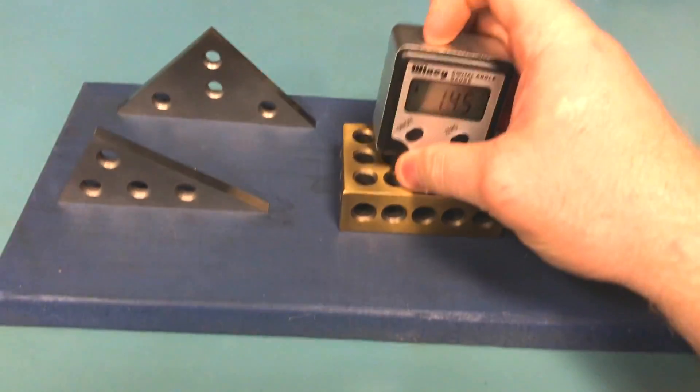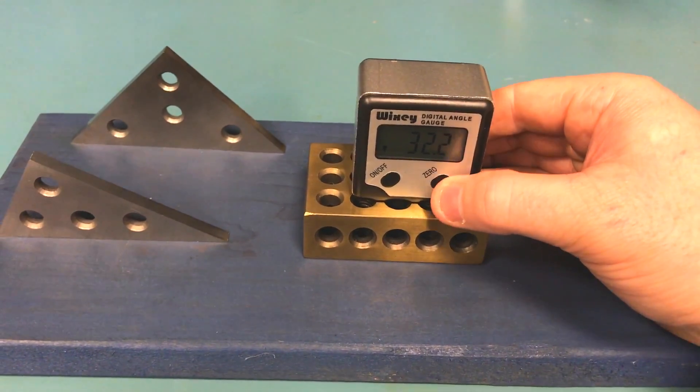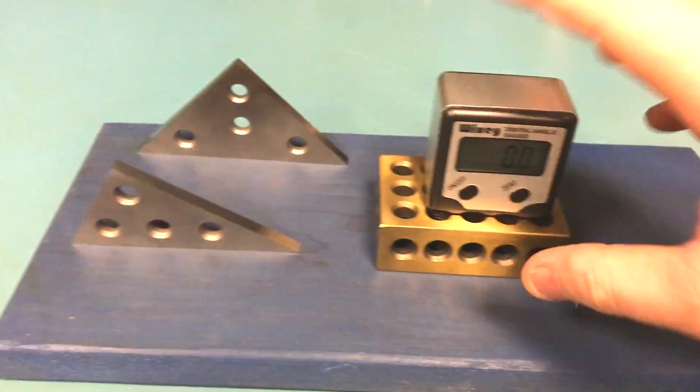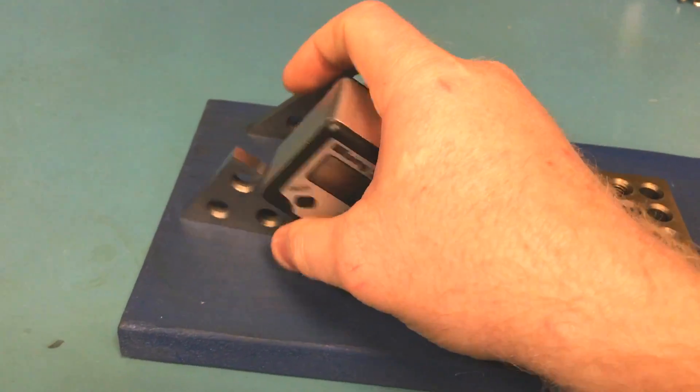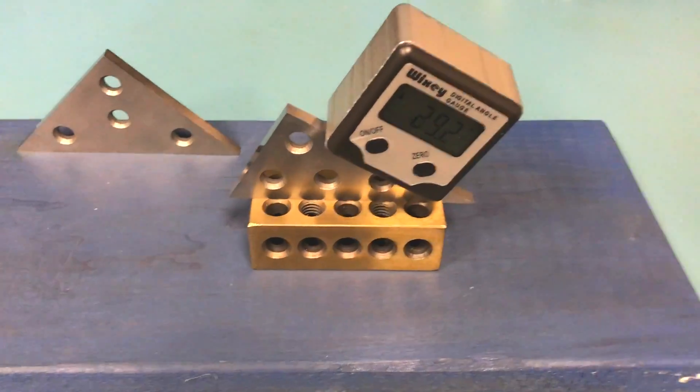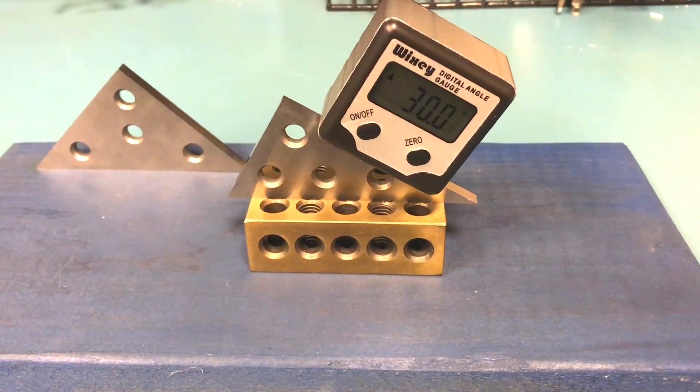So it has three magnets on the bottom, and when you put it on the surface, you're going to want to zero it out. And I have a couple angle gauge blocks here. So this is a 30 degree angle gauge block.